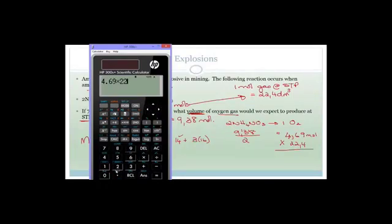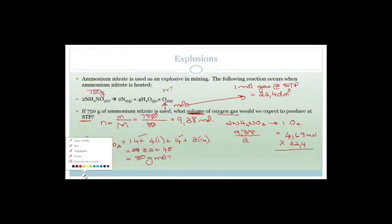So we're going to go 4.69 multiplied by 22.4 equals 105.056. But remember, always remember that we are rounding off to two decimal places. So that becomes 105.06 decimetres cubed.